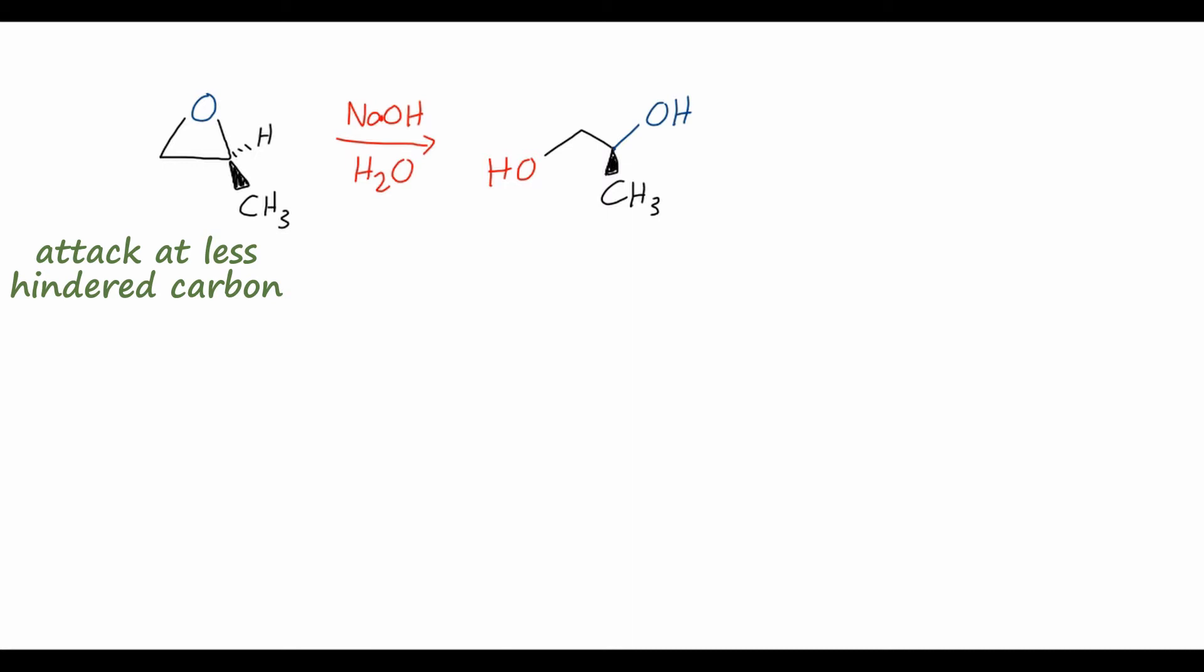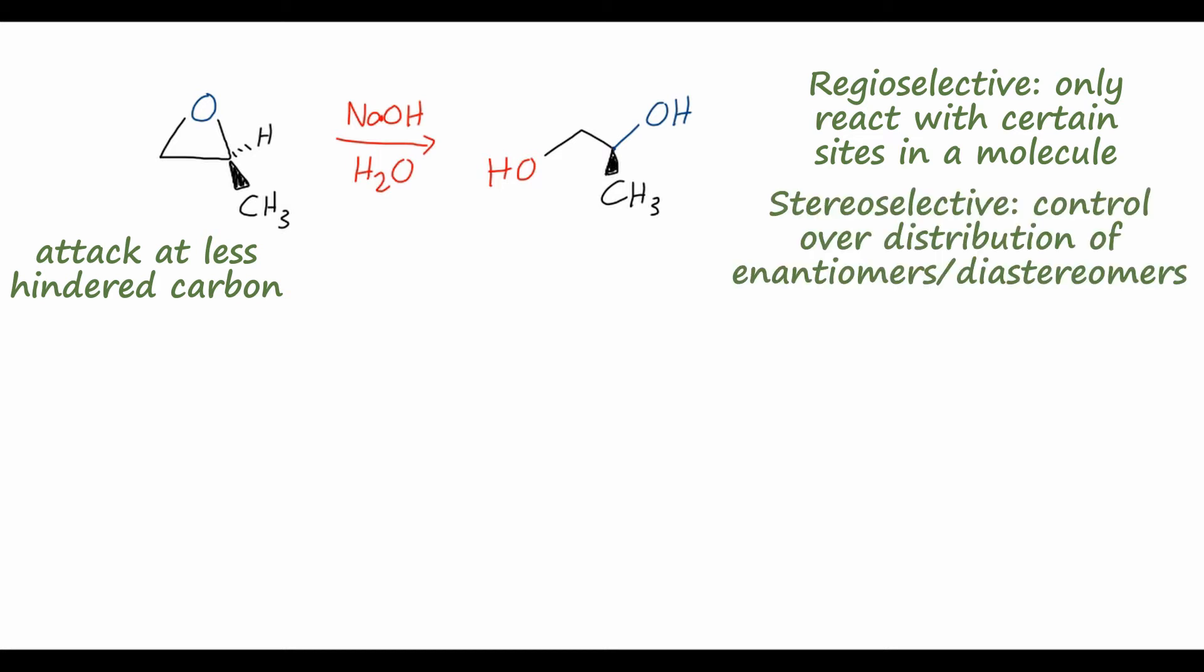What this means is that the ring-opening reactions we're looking at are both regioselective, meaning we can control where in a molecule a reaction takes place, so in this case the less substituted carbon, and also stereoselective, meaning we can control the amount of one enantiomer or diastereomer we get over another. So in this case, this is an enantiomerically pure starting material, and we also end up with an enantiomerically pure product.